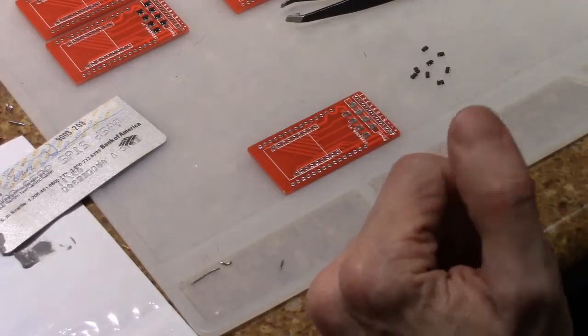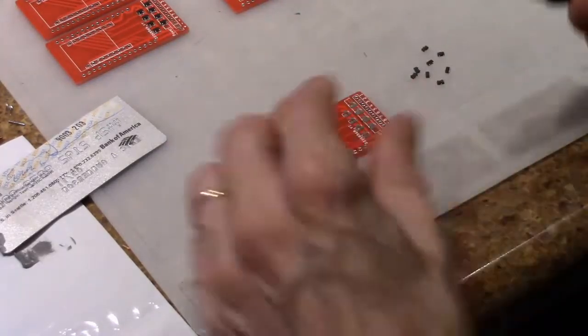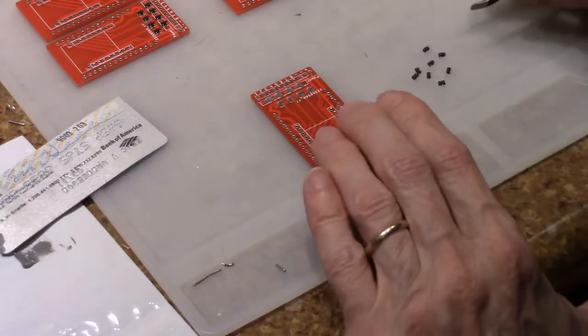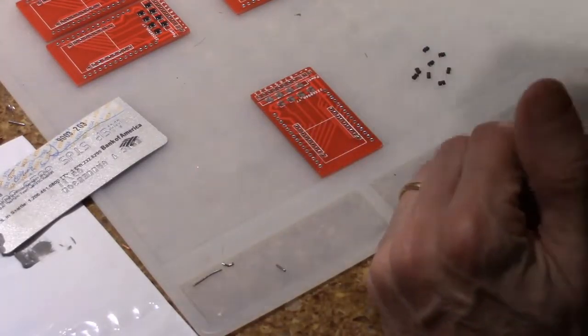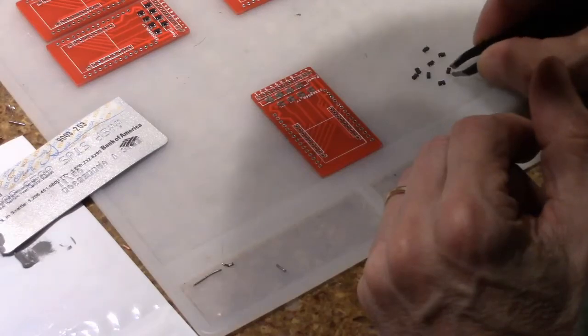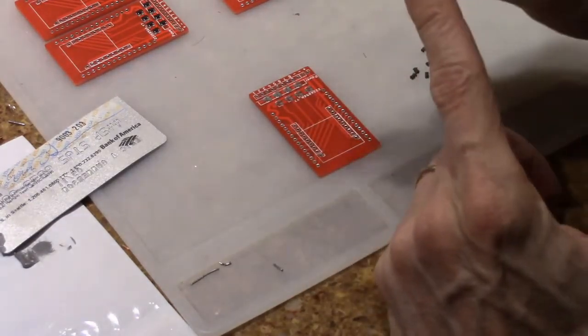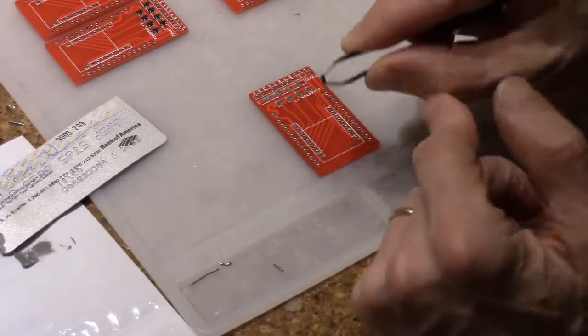So we can set the stencil aside and now we just need to be placing our components. So I'm going to turn it that way. This might be kind of hard to see. I'll try not to get in your way. Pick up a MOSFET. Now each of these, you can see they're pretty tiny here.